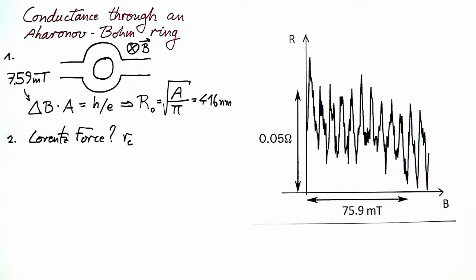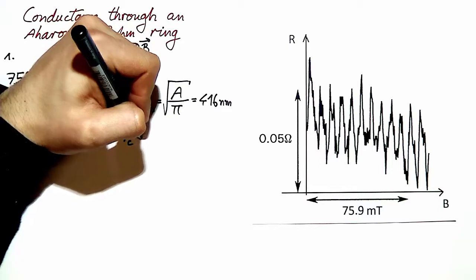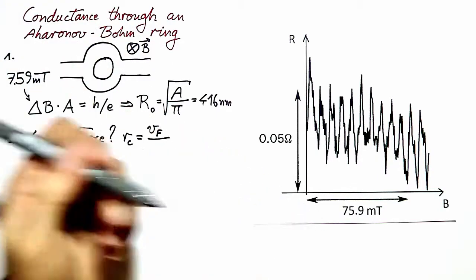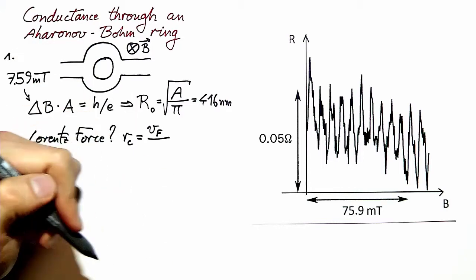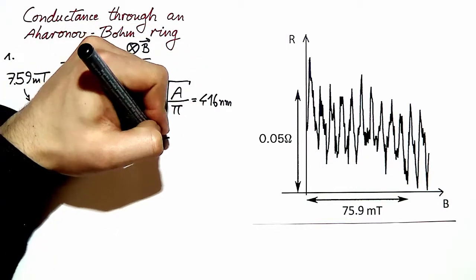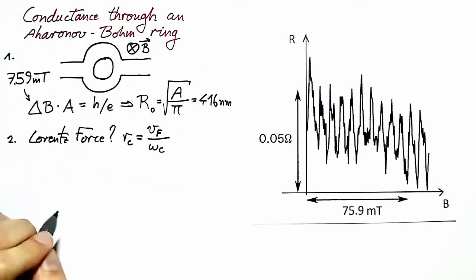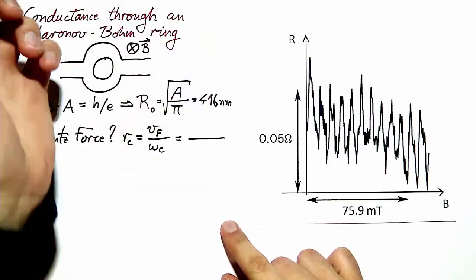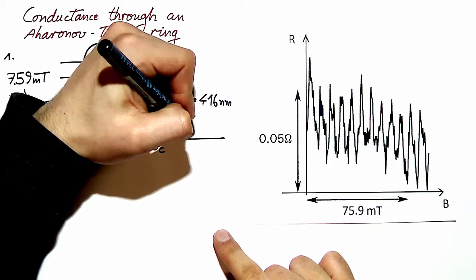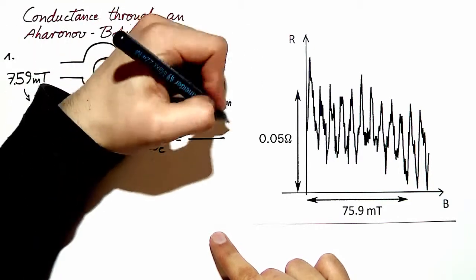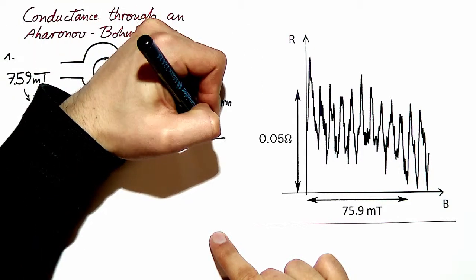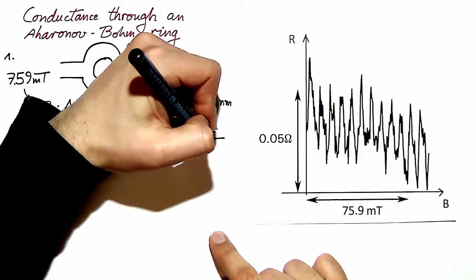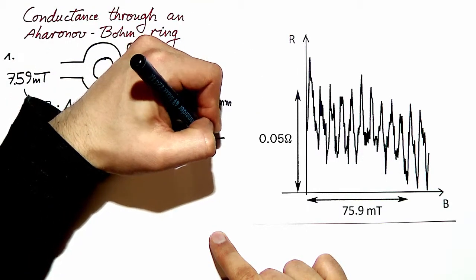The cyclotron radius is the ratio of Fermi velocity, the tangential velocity to cyclotron motion, over the angular velocity, which is the cyclotron frequency. This expression is ℏ times the Fermi wave vector divided by charge of charge carriers times magnetic field.